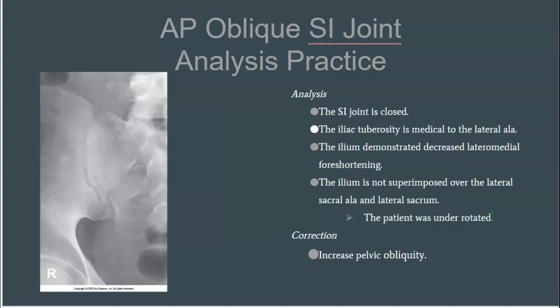In the second practice analysis we have the opposite. The SI joint is demonstrated as closed, the iliac tuberosity is medial to the lateral ala, the ilium demonstrates decreased lateral-medial foreshortening, and the lateral sacrum is not superimposed by the ilium. In this case the patient was under-rotated, so we need to increase the obliquity to 25 to 30 degrees.